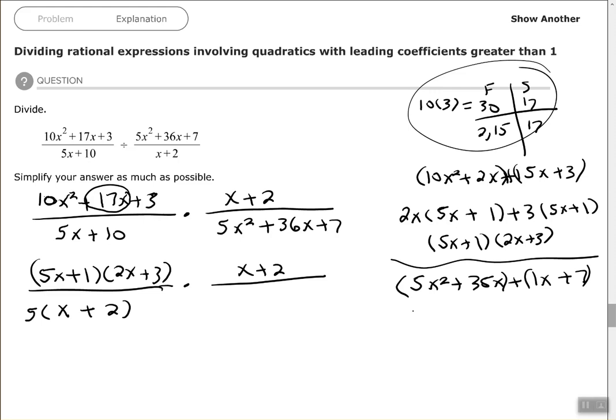GCF out of the first group is 5x, which leaves us with x + 7. GCF of the second group—remember, if you don't see anything else you can factor out, you must factor out a 1. So factor out a 1, that leaves us with x + 7.